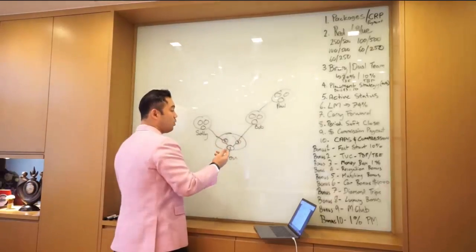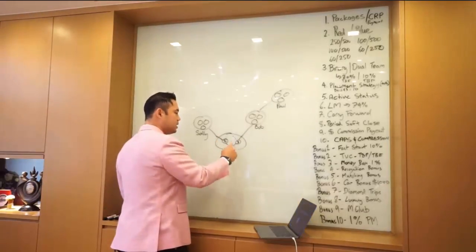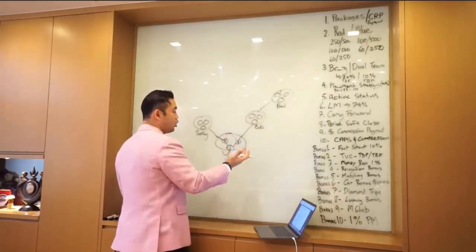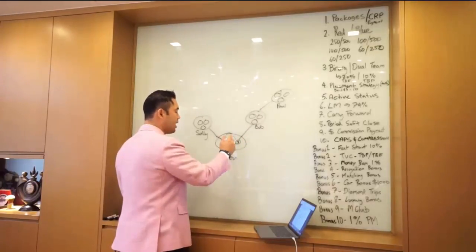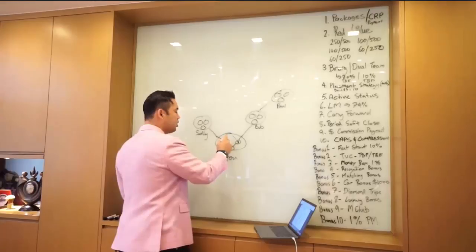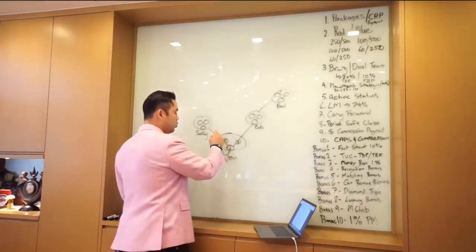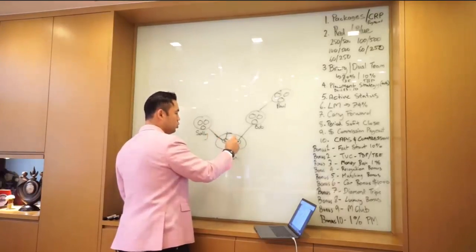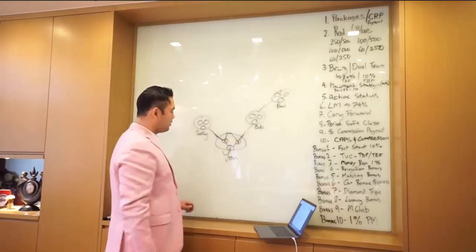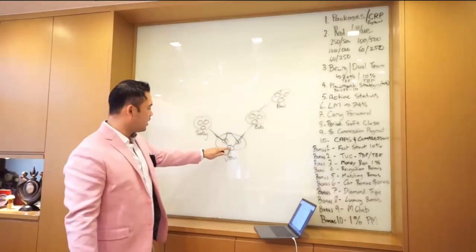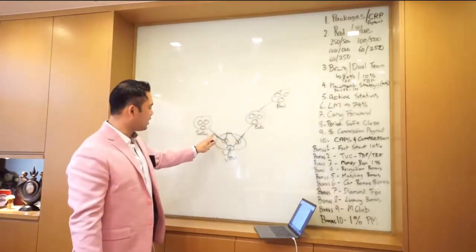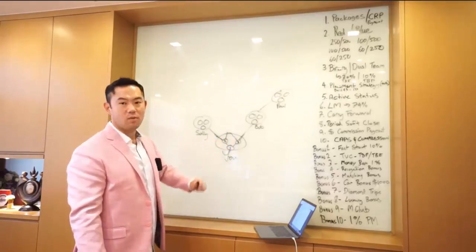So realistically, another way to say is that each business that you create or each account that you have, and you should only have one, Tia and I only have one account. Each account gives you the ability to build four legs: one, two, three, four. Because in here, there's business center one, there's a left leg, right leg, business center two, there's a left leg, right leg, business center three, there's a left leg, right leg.